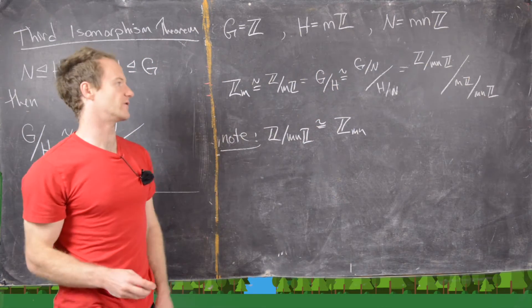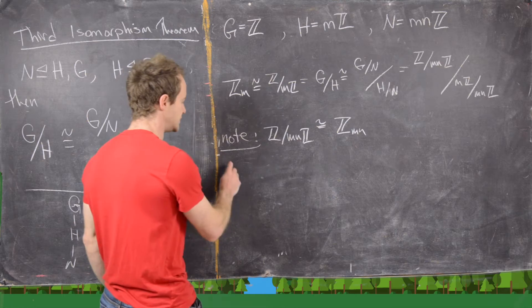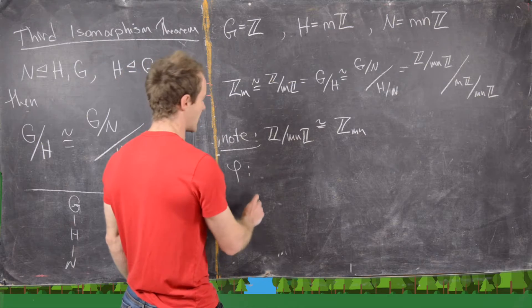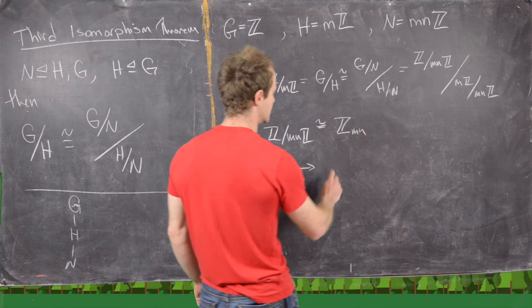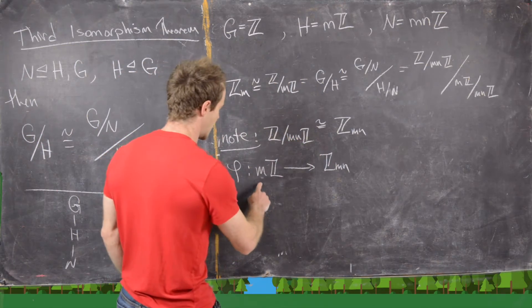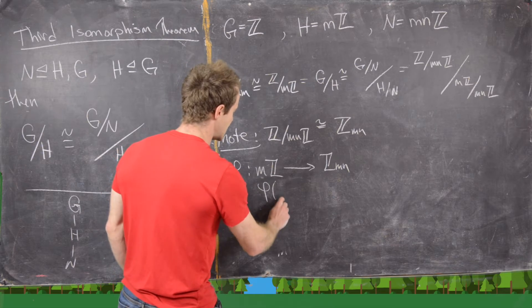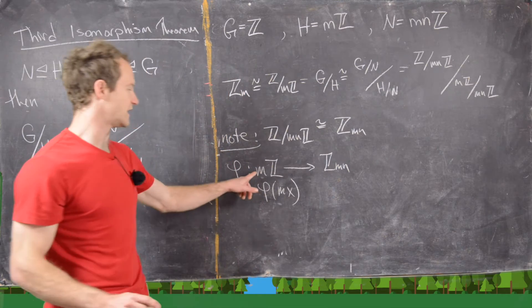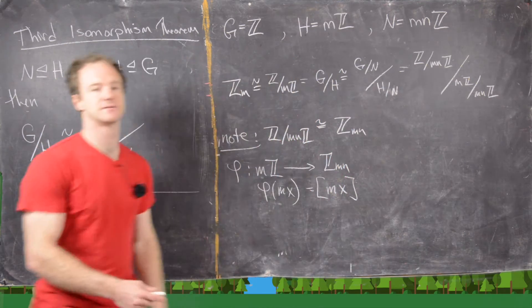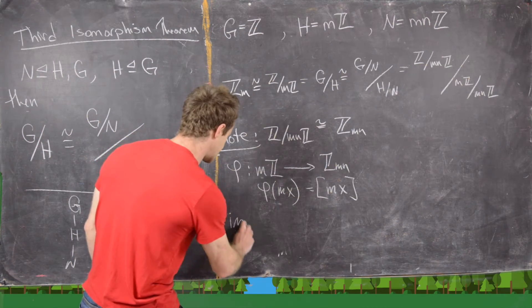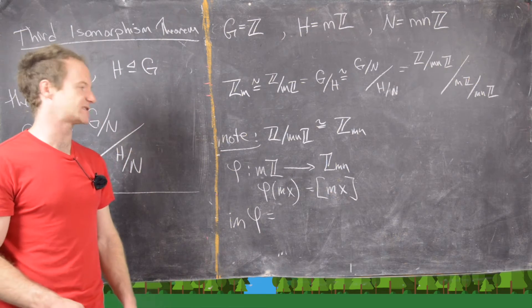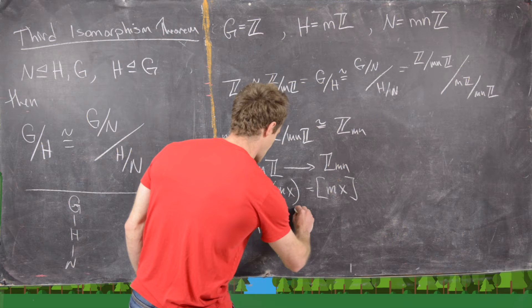Now we need to think about the denominator of the right-hand side, and we'll do that by looking at the following homomorphism. Let's define a homomorphism φ from mZ into Z_MN. We'll send φ(mx) — notice everything in mZ is a multiple of M — to the equivalence class [mx]. The image of φ inside Z_MN will be the cyclic subgroup generated by M, written as the cyclic subgroup inside Z_MN generated by the equivalence class of M.